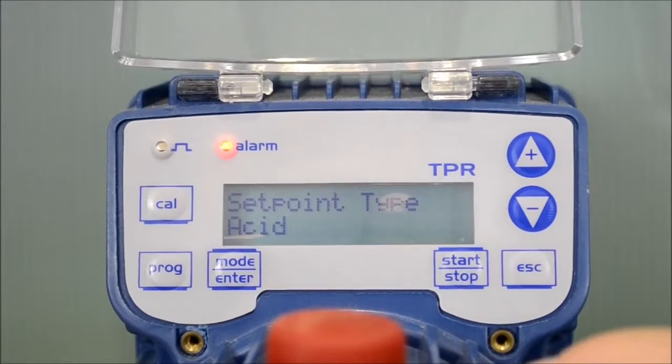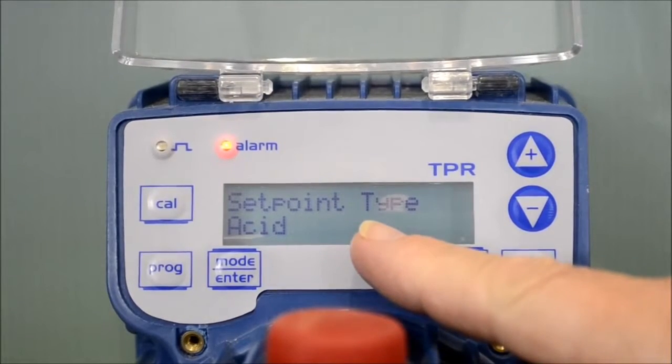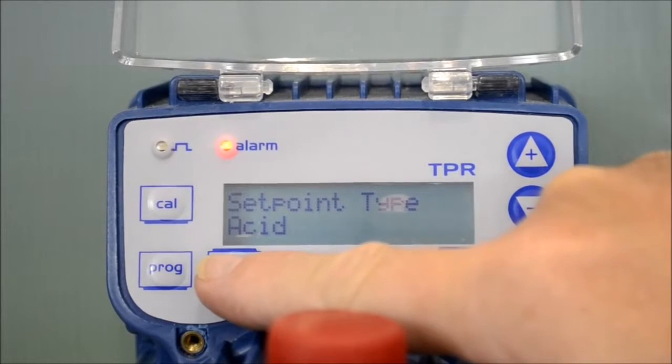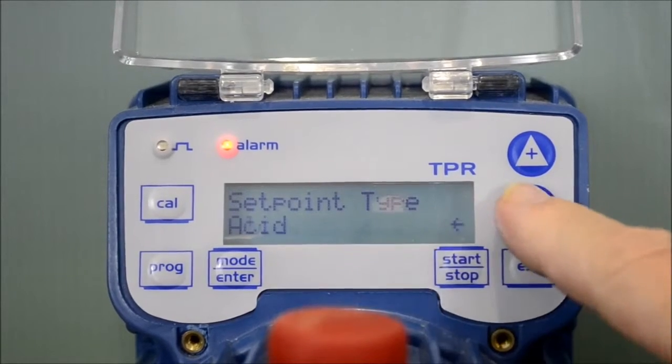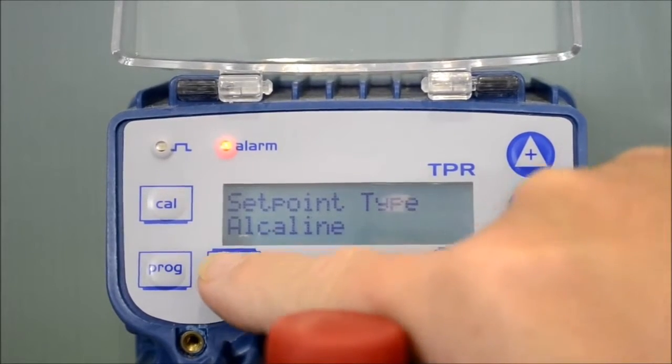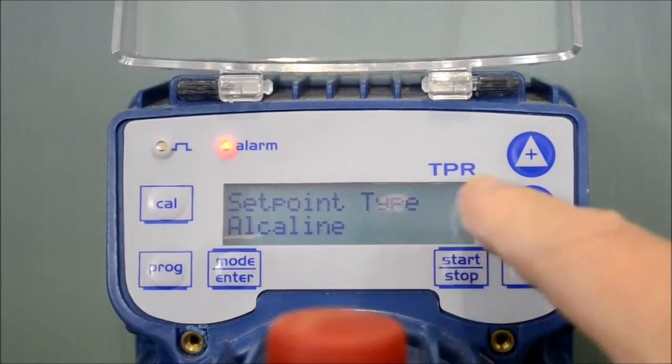The next display screen is the type of chemical you wish to dose, acid or alkali. If you wish to change this, simply press enter to make the display flash. Change using the buttons and then enter to confirm. You can then move on to the next display.